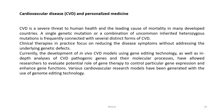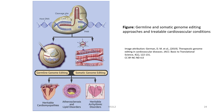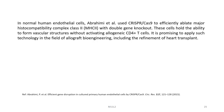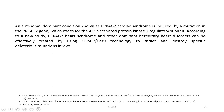Various cardiovascular research models have been generated using genome editing technologies. These include germline and somatic genome editing for treatable cardiovascular conditions like heritable cardiomyopathies, atherosclerosis, lipid disorders, and heritable arrhythmic disorders. In normal human endothelial cells, Abrahami et al used CRISPR-Cas9 to efficiently ablate major histocompatibility complex class II with double gene knockout. These cells hold the ability to form vascular structures without activating allogenic CD4+ T cells, and this technology is promising for allograft bioengineering including refinement of heart transplant.